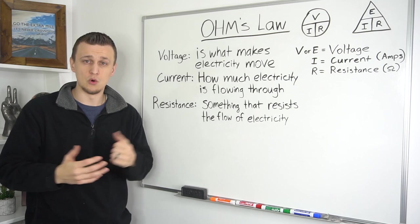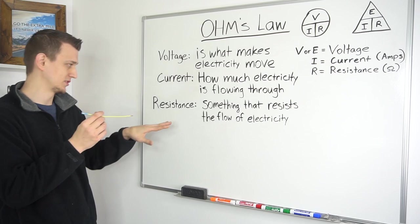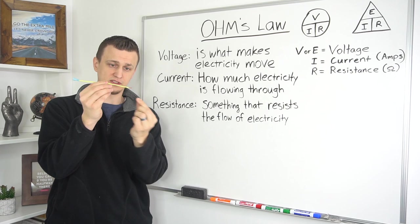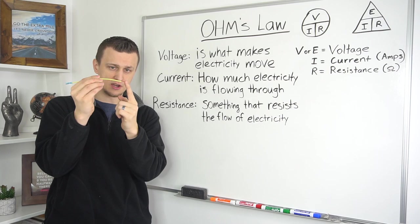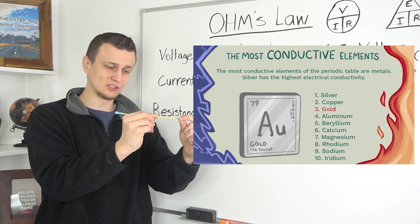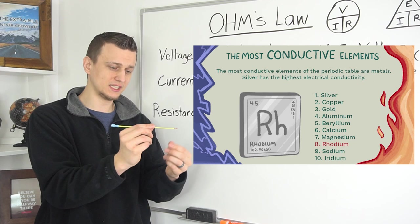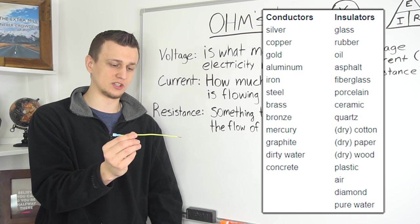So basically the volume or how much electricity is flowing through. And resistance is something that resists the flow of electricity. And one example of that is a piece of wire, just to make resistance a little bit more clear. A piece of wire is made out of two things. One is the insulation around the wire. And the inside of the wire is typically made out of copper. Metals have a very low resistance to electricity. So they're perfect to use as conductors to conduct electricity. Whereas plastic or rubber has a very high resistance to electricity.